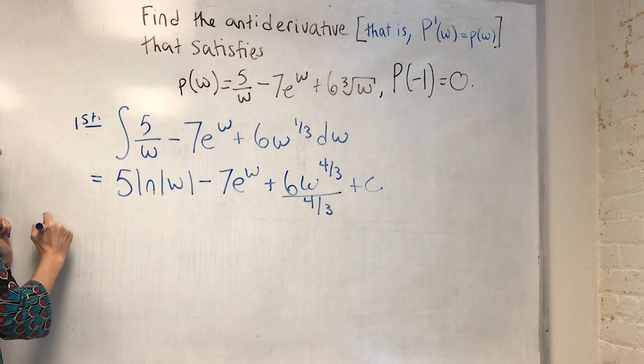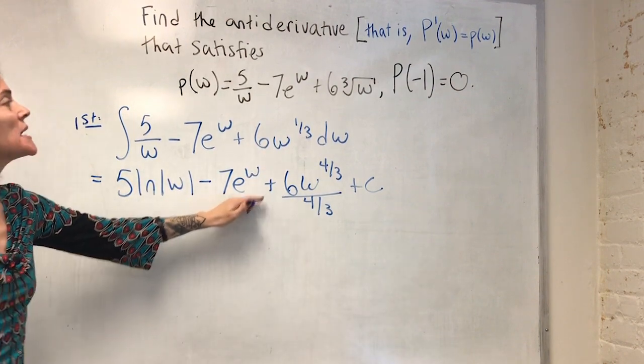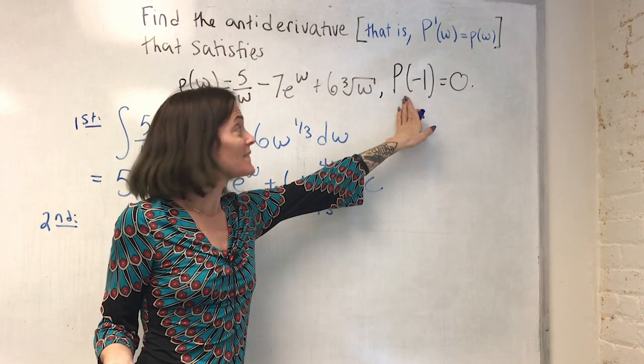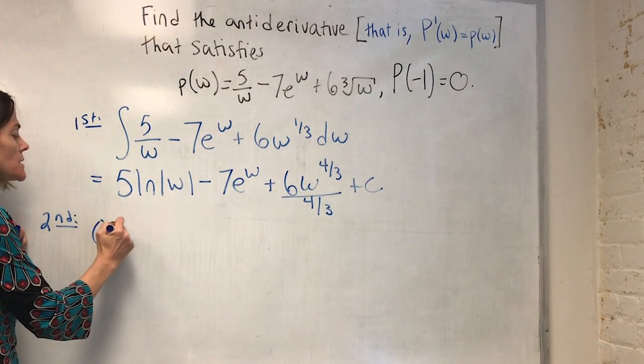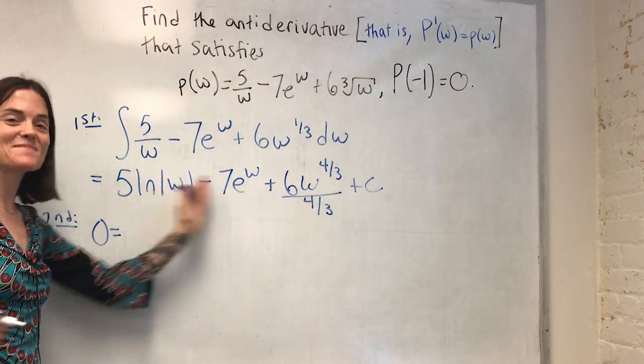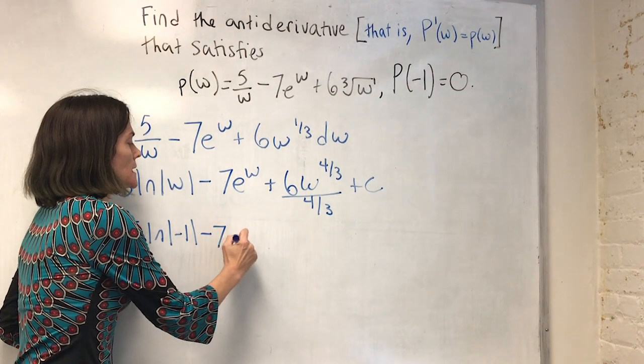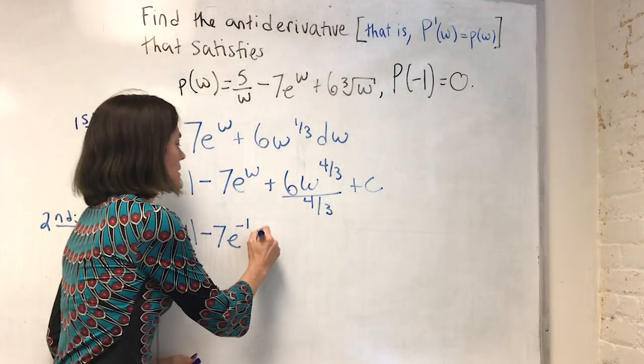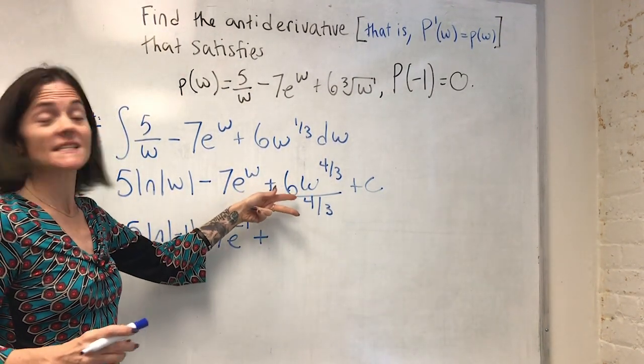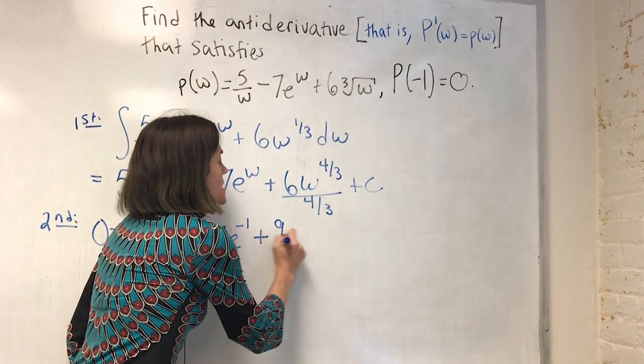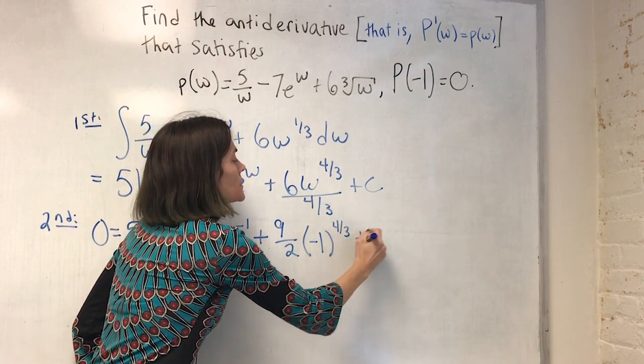This is not the final answer in this case. Now, next, I'm going to use this. So this is the general form. But I have this very specific information that capital P of minus one is zero. So I set zero to equal. Now I evaluate this at minus one, five ln absolute value minus one, minus seven e to the minus one plus, and maybe I will clean up this coefficient a little, this would be 18 over four, or nine over two, and then minus one to the four thirds plus c.